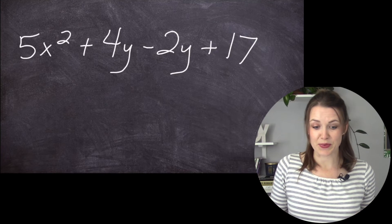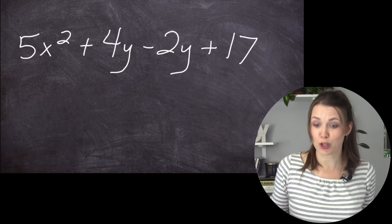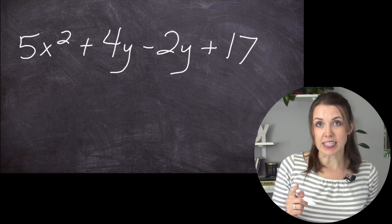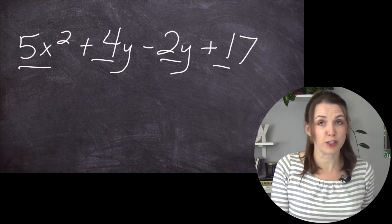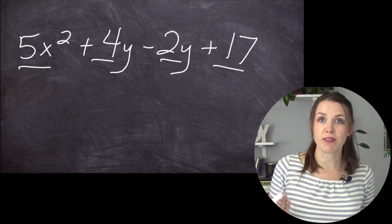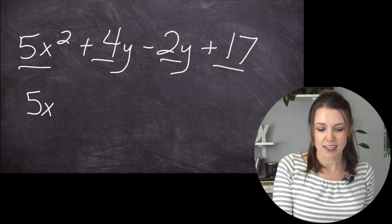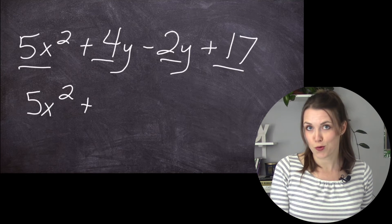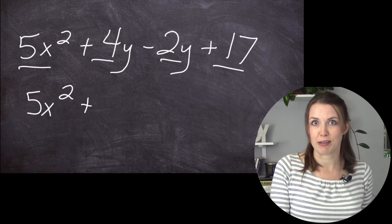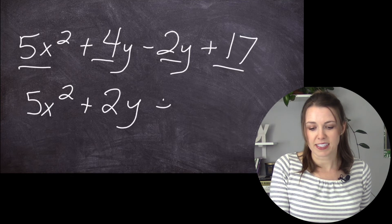So here's another one. 5X² plus 4Y minus 2Y plus 17. So this has four terms. I have one, two, three, four terms. However, two of them I can add together. So I'm going to go 5X² plus 4Y minus 2Y. So maybe these are like lemons or something is 2Y plus 17.